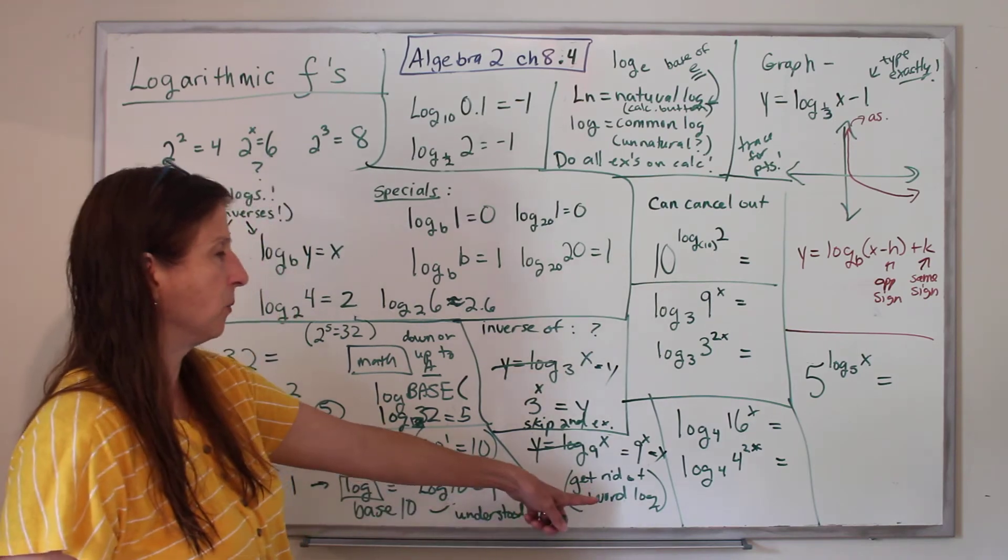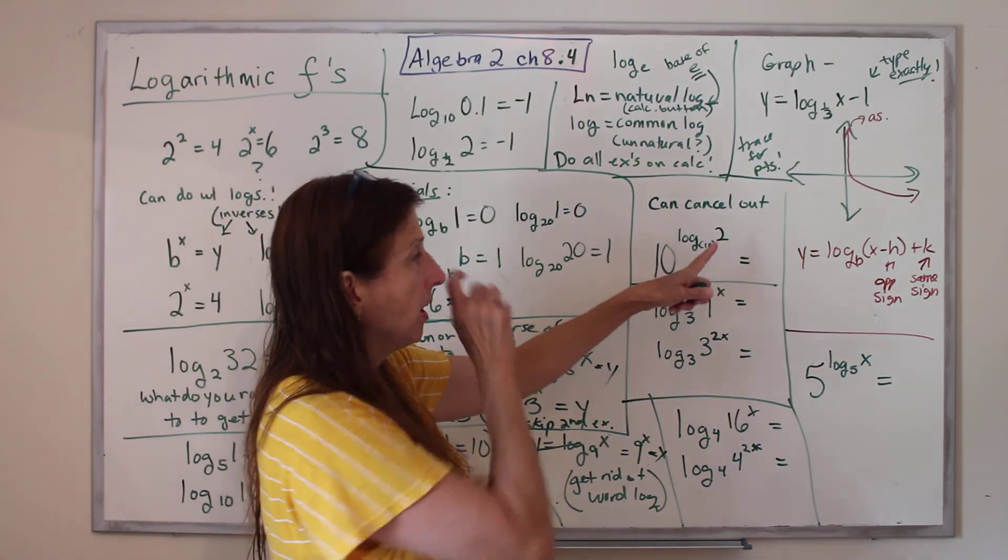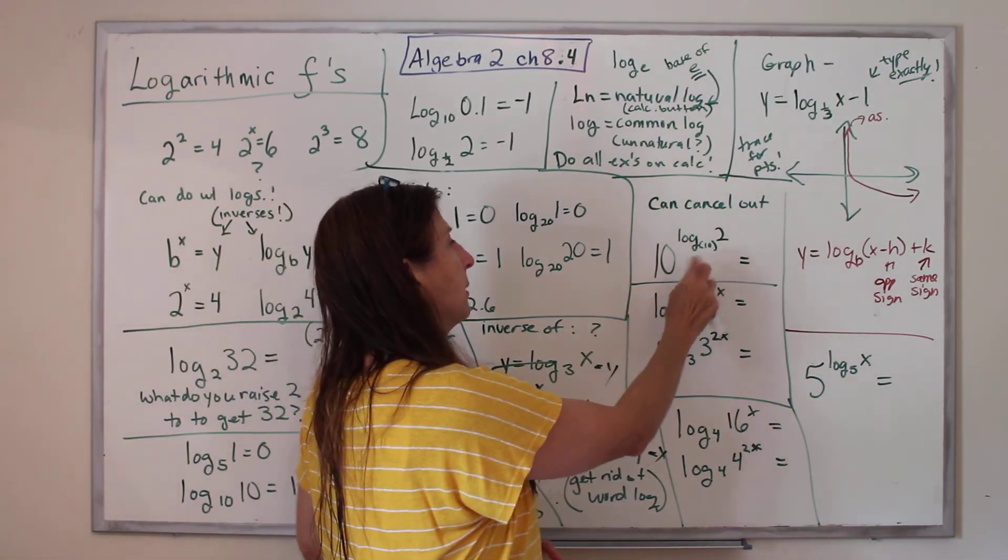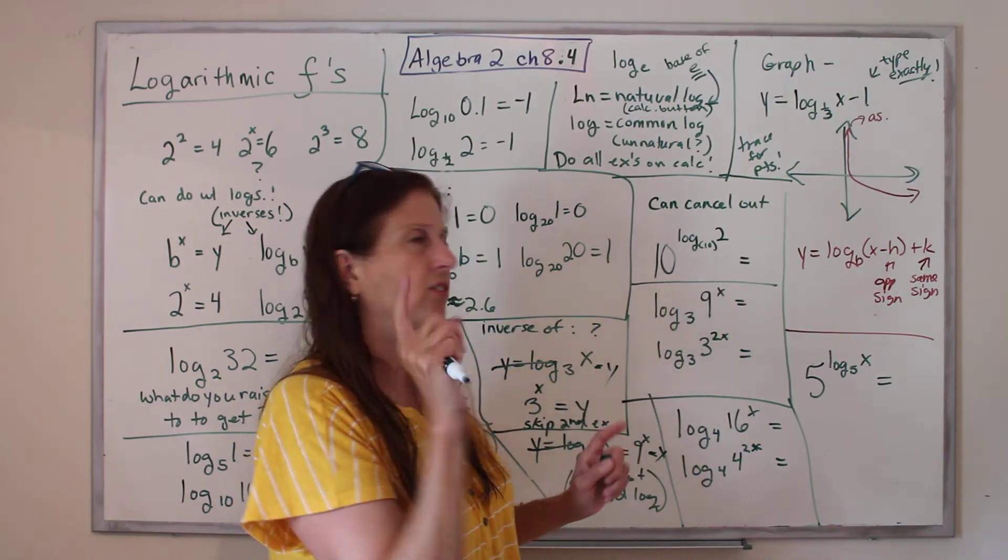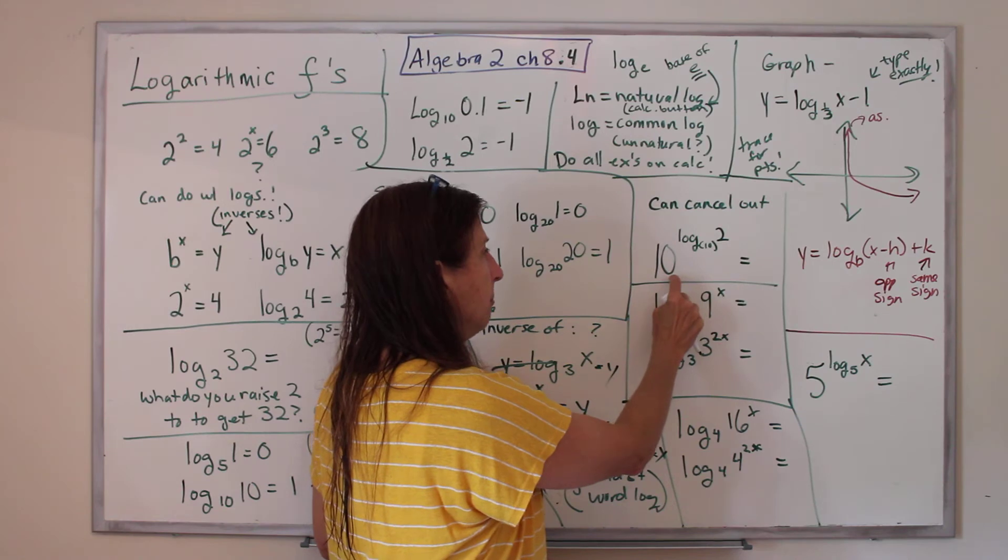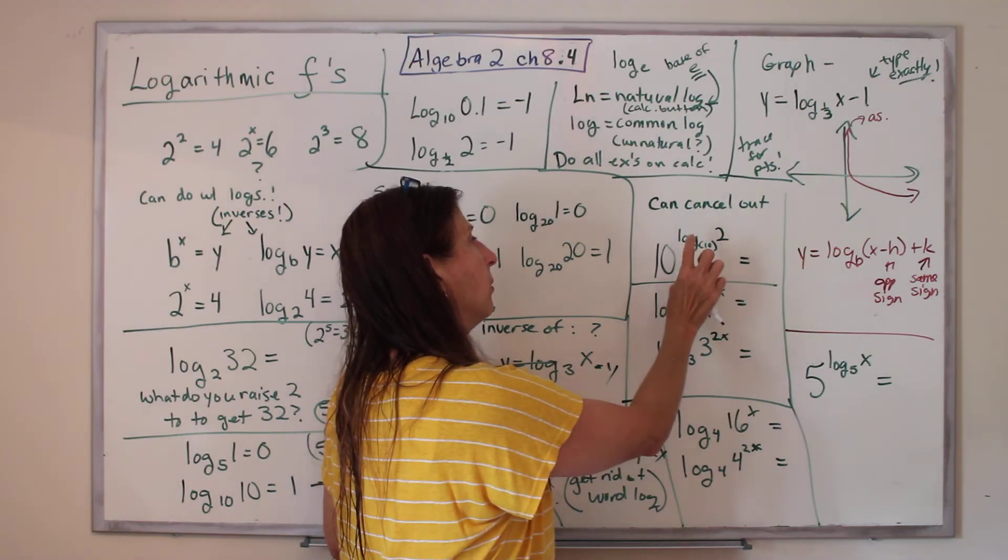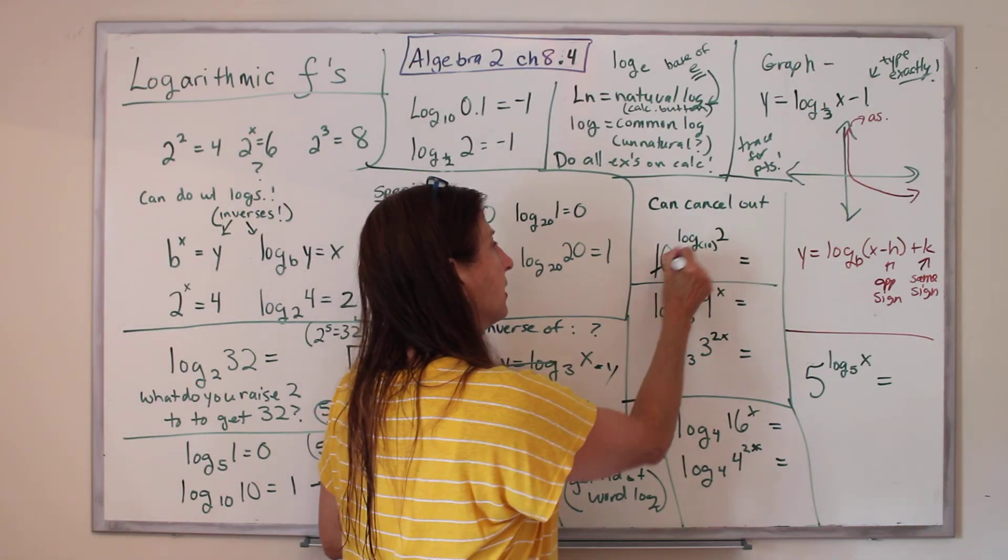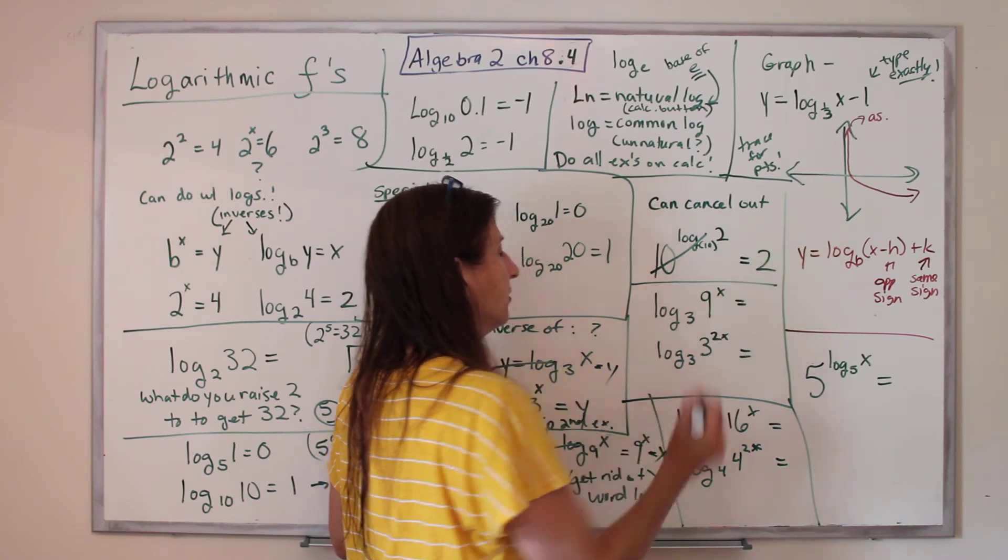Okay, so get rid of the word log. Okay, you can also cancel out. Yeah, remember I told you exponents and logs are kind of opposites. They cancel out. So if you have a number raised to the power of log that base, you get to mark them all out, and the answer is 2.